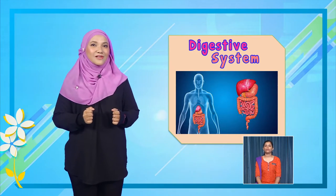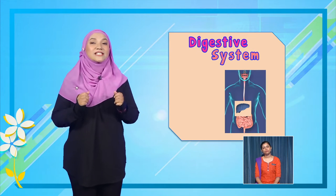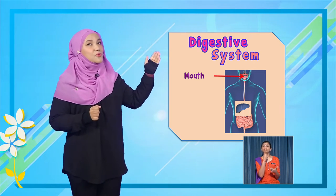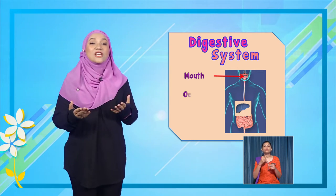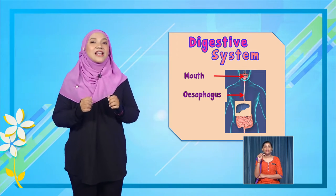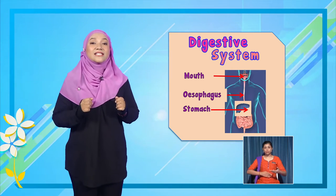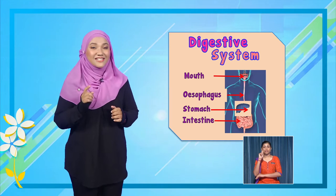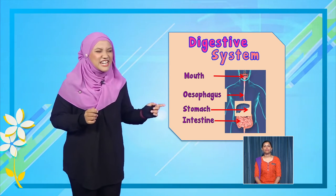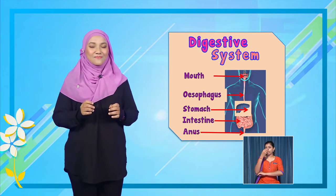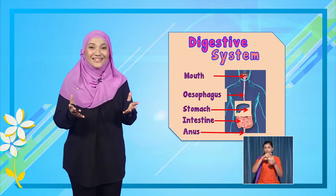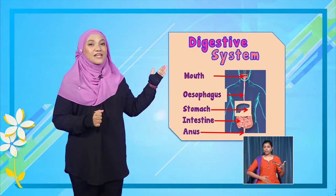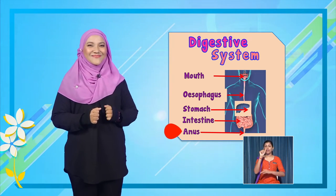Look here. This is the flow of food inside our body. First, the mouth. Then it goes down through the esophagus. Next, into the stomach. From the stomach, the food goes into the intestine. And finally, the anus — where the food exits the body. Let's repeat: mouth, esophagus, stomach, intestine, anus. Now that all of you have learned the five body parts through which our food flows, it is time to go deeper into the process itself.